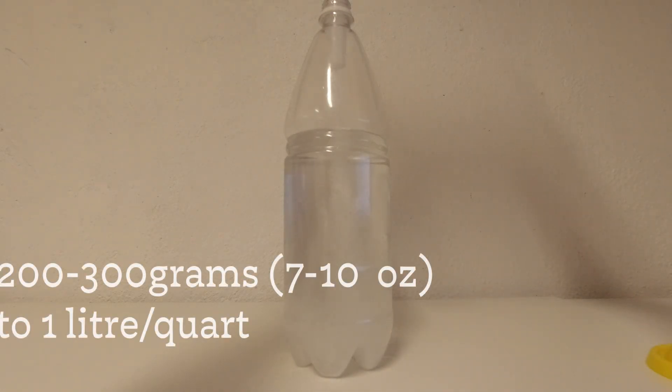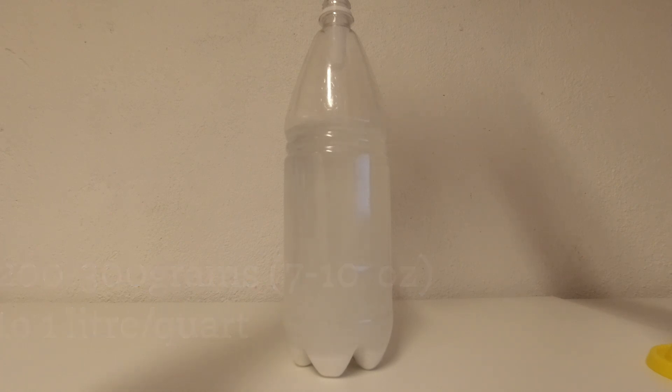To a liter, about a quart, add about 7 to 8 ounces or 200 to 300 grams of potash.